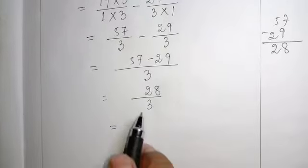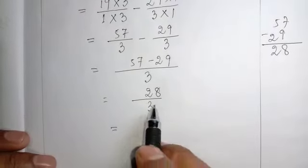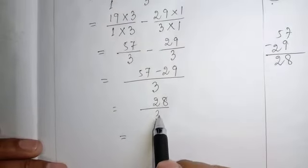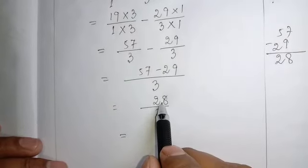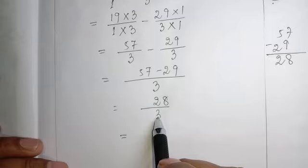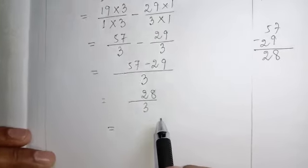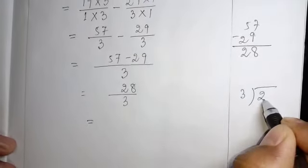So, this one we will write in the mixed fractions because numerator is bigger than the denominator. If the numerator is bigger than the denominator, we have to write it in the mixed fractions. Then, how to write in the mixed fractions?